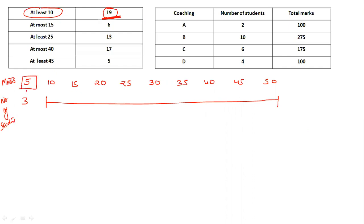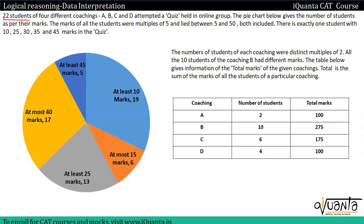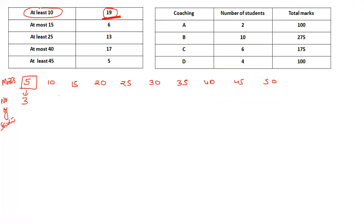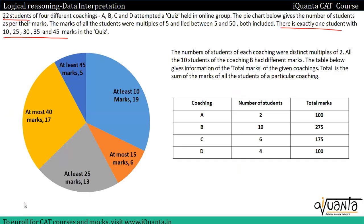Three students scored five marks. Now let's first note down what is directly given to us: exactly one student each scored ten, twenty-five, thirty, thirty-five, and forty-five marks. So these five values each have exactly one student.